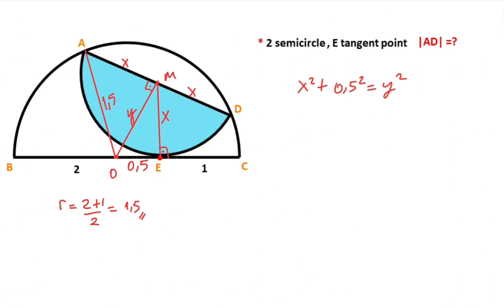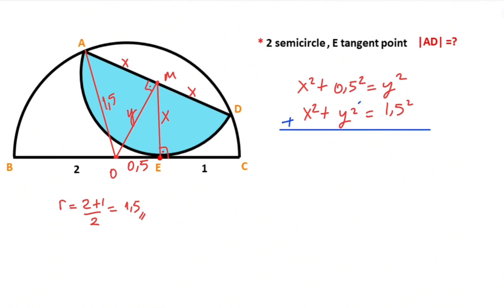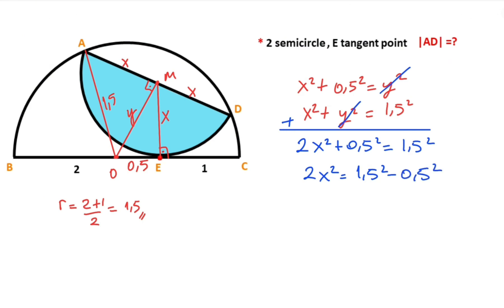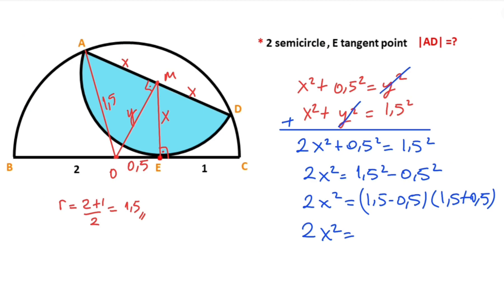For this triangle, if we apply the Pythagorean theorem, we get: x squared plus x squared plus y squared equals 1.5 squared. Therefore, if we add these two equations together, the y squared terms cancel, giving us: 2x squared plus 0.5 squared equals 1.5 squared. That means 2x squared equals 1.5 squared minus 0.5 squared, which is 1.5 minus 0.5 times 1.5 plus 0.5, so 2x squared equals 1. Therefore x squared equals 0.5, and x equals 1 unit.